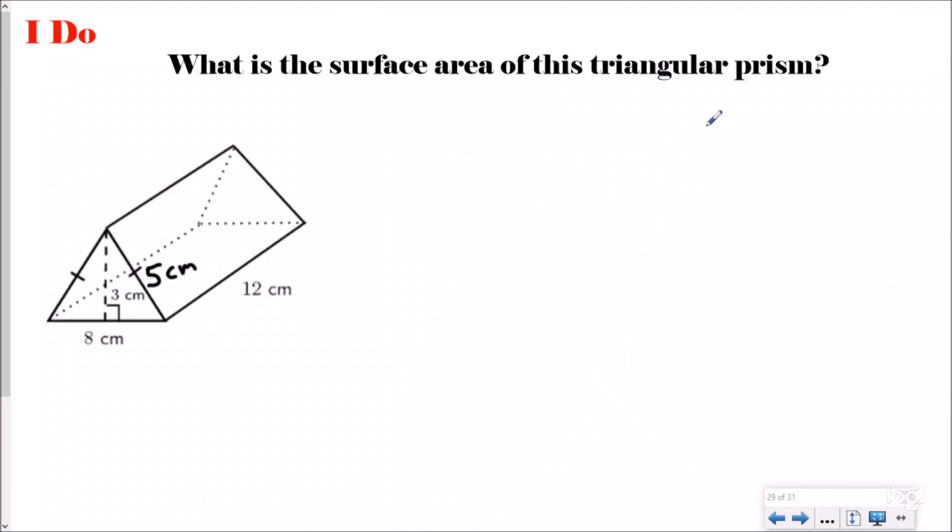The surface area of a triangular prism is actually very similar to finding the surface area of a rectangular prism, except the sides are different. You're going to have some sides that are obviously triangles. The first thing we're going to do is draw out all the faces.